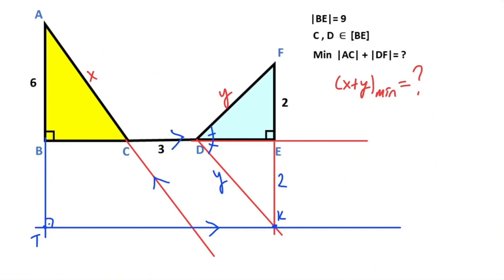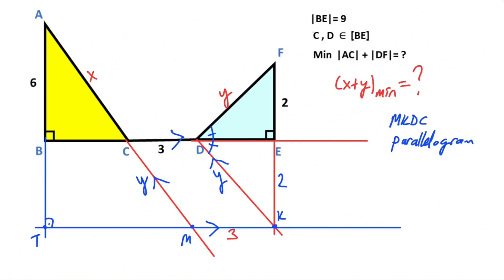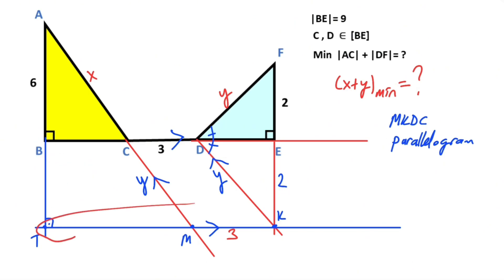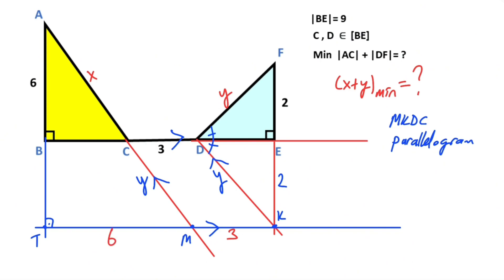These two lines should be parallel to each other for x and y to be linear. Let's call here point M. Therefore notice that MKDC is a parallelogram, so this length is also y. The length of BE is given nine units, which means here is also equal to nine, so six units are left here.